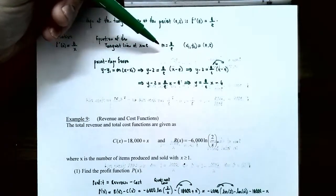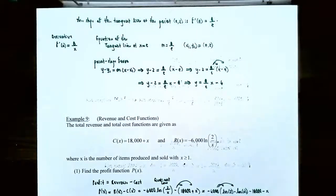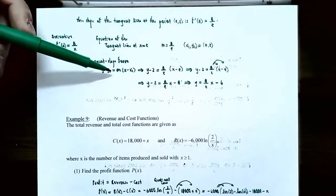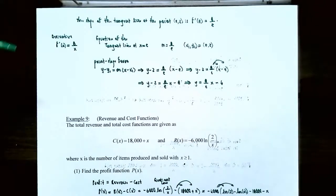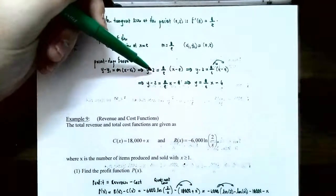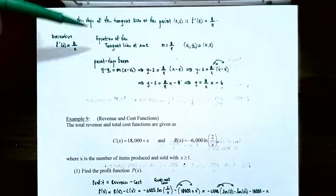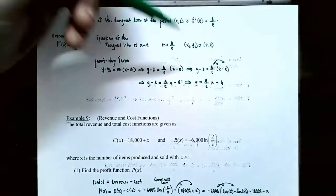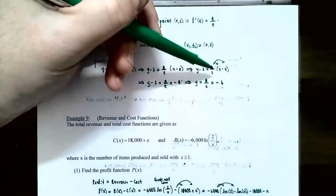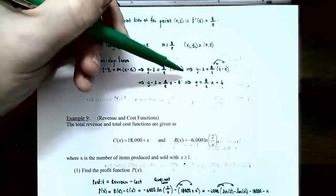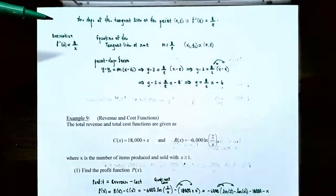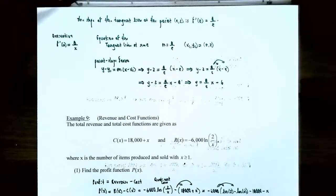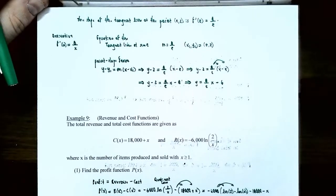Now that we have the slope 8 divided by e, and the tangent line passes through the point (e, 2), we can find the equation using point-slope form: y minus y₁ equals slope times (x minus x₁). Plugging in: y minus 2 equals 8 divided by e times (x minus e). Distribute the slope: 8 over e times x minus 8 over e times e, and the e's cancel to give minus 8. So y minus 2 equals 8 over e times x minus 8. Adding 2 to both sides, the equation of the tangent line is y equals 8 divided by e times x minus 6.